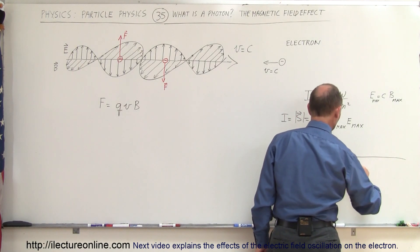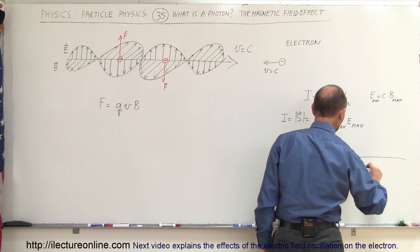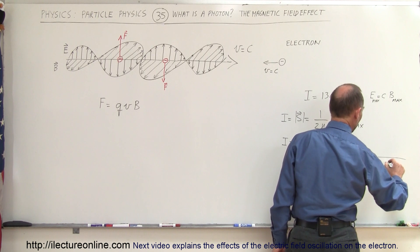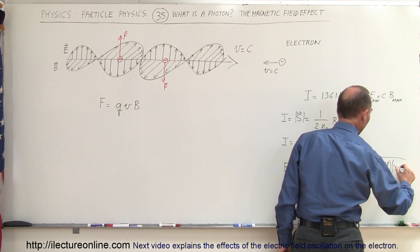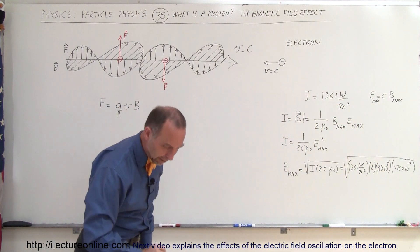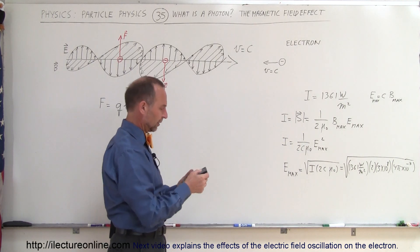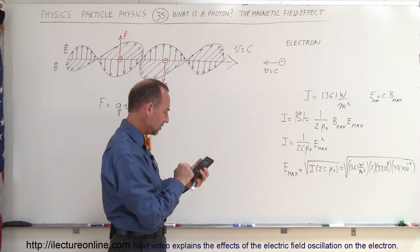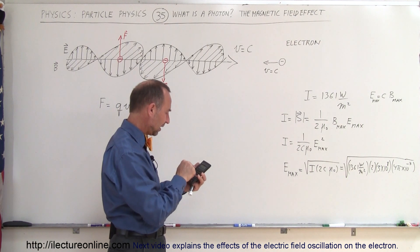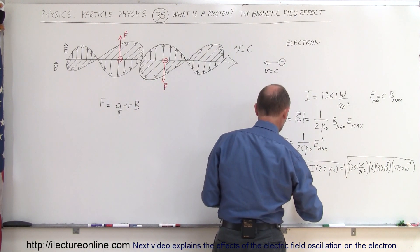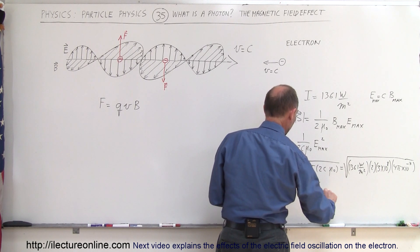Plugging in numbers: 1361 watts per square meter, times 2, times the speed of light (3×10⁸ m/s), times mu-naught (4π×10⁻⁷). Taking the square root, we get 1013. So E-max in sunlight is equal to 1013 volts per meter.